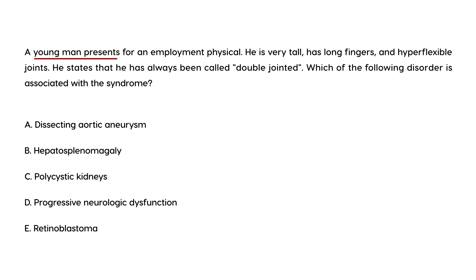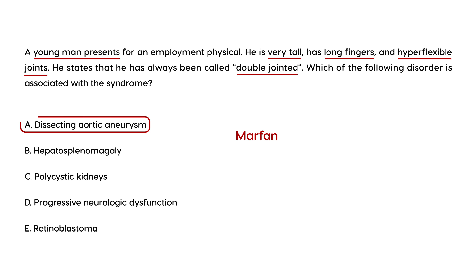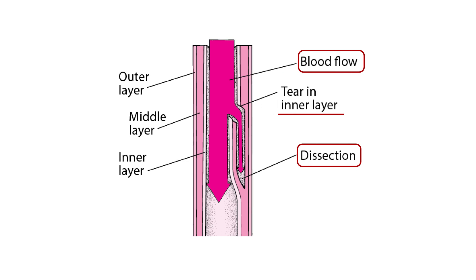The next vignette: a young man presents for an employment physical. He is very tall, has long fingers and hyperflexible joints, and states he has always been called 'double jointed.' Which of the following disorders is associated with these symptoms? This is relatively straightforward — the presentation is about Marfan syndrome, but Marfan is not one of the choices. You have to think one step further: which finding is associated with Marfan's? The answer is dissecting aortic aneurysm.